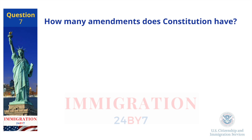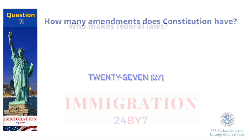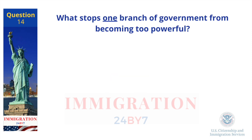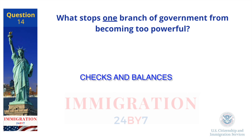How many amendments does the Constitution have? 27. Who makes federal laws? Congress. What stops one branch of government from becoming too powerful? Checks and balances.